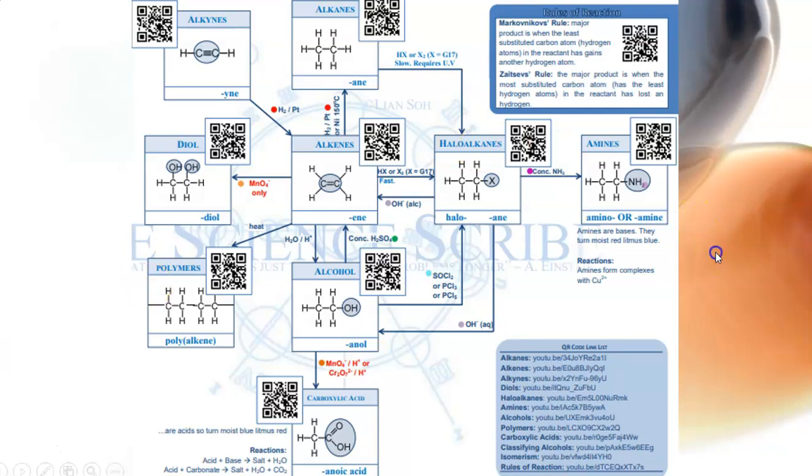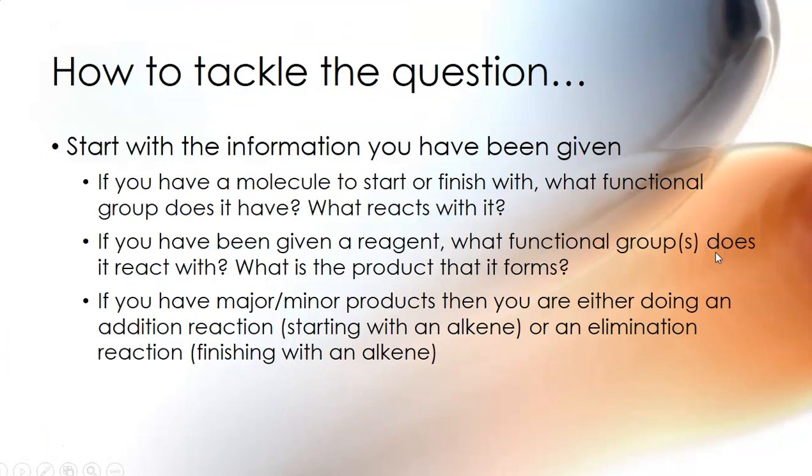Okay so when you're given an exam question what do you do with it? Well start by looking at what you already know. So if you've been given a molecule to start with or a product at the end, think well what functional group is there, what things react with that functional group, what types of reactions does that functional group undergo. If you've been given a product at the end, what reactions form that product?